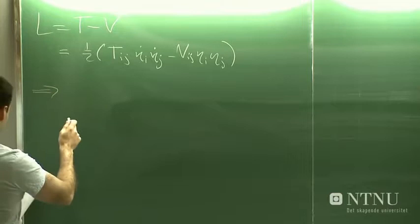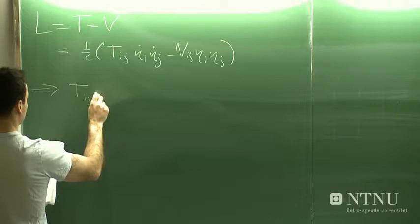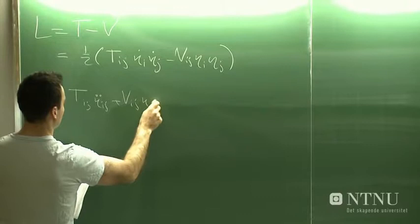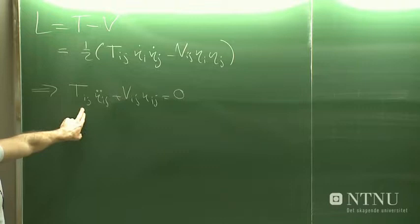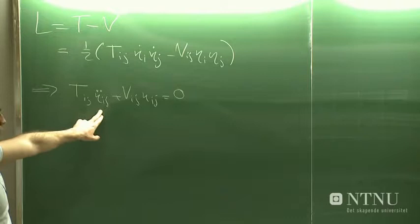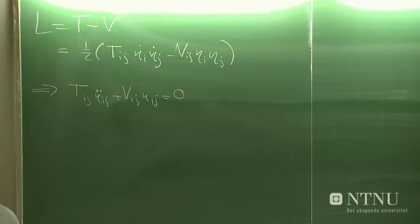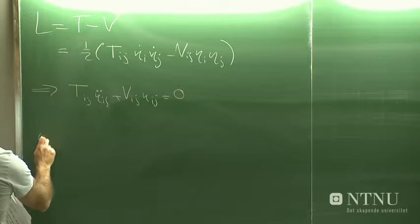By using Lagrange's equations on this function, we found the master equation of motion for the etas. This is in fact a coupled second-order differential equation because of the sum over j. But although it's coupled, it had the form of a one-dimensional simple harmonic oscillator.